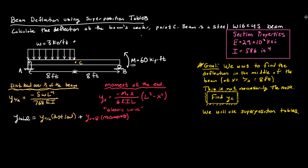So let's start with the distributed load. We have our equation and we know w, we know L, and we're just going to leave everything in terms of EI for now. L is always going to be the total length of the beam. So it's going to be negative 5 times w — our w is 3 kips per foot — times L to the fourth, where L is 16 feet, all divided by 768 times EI.